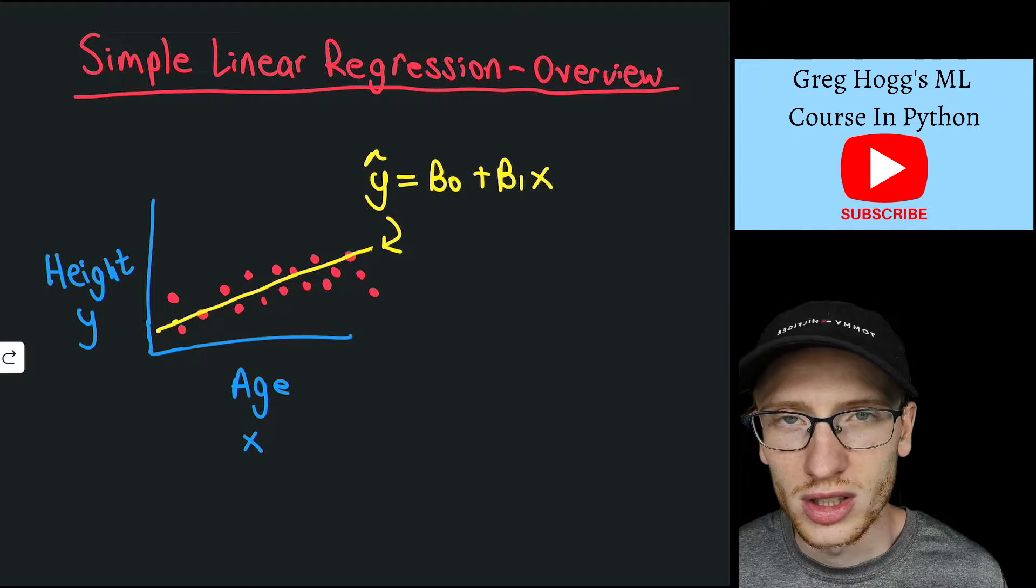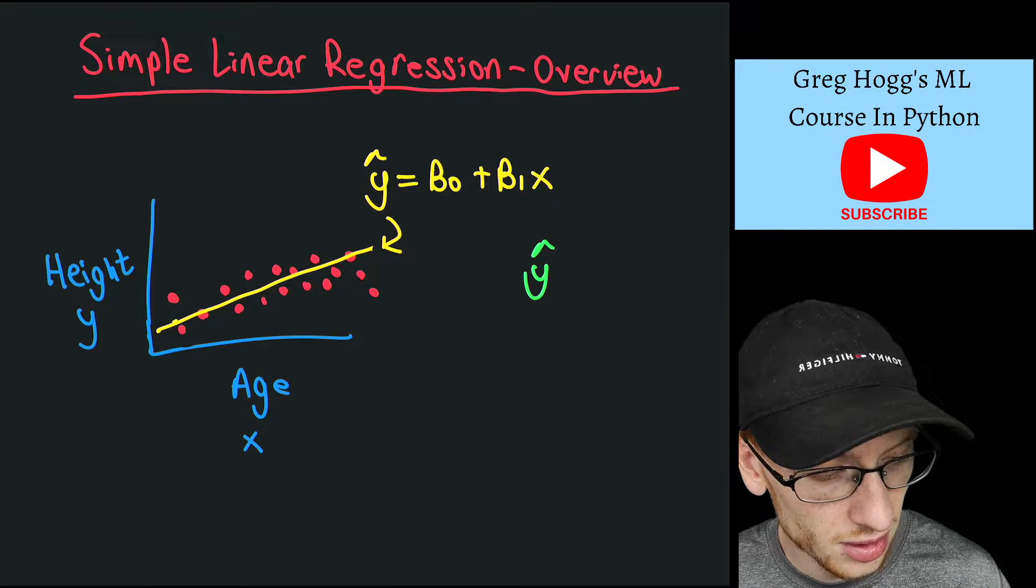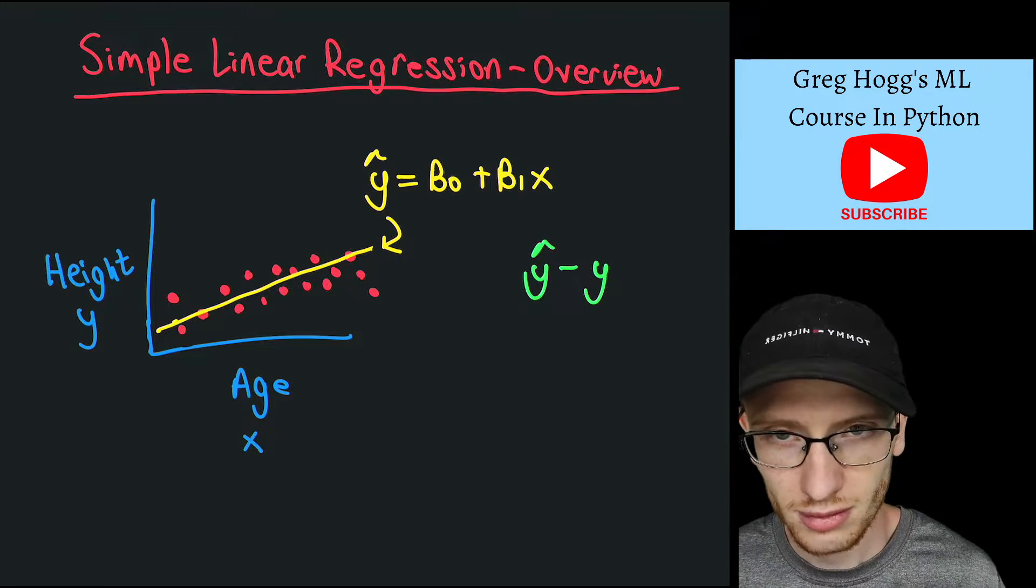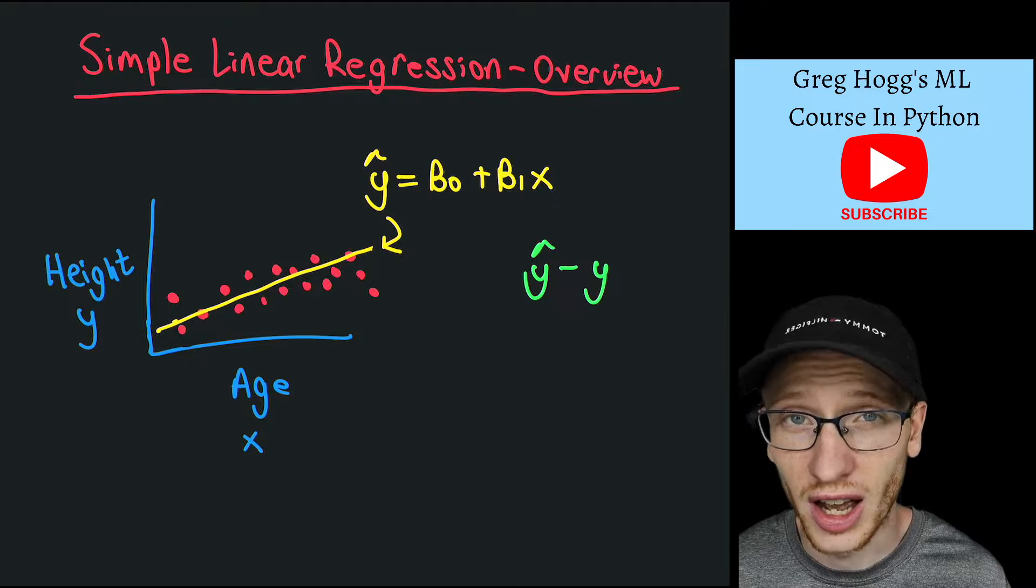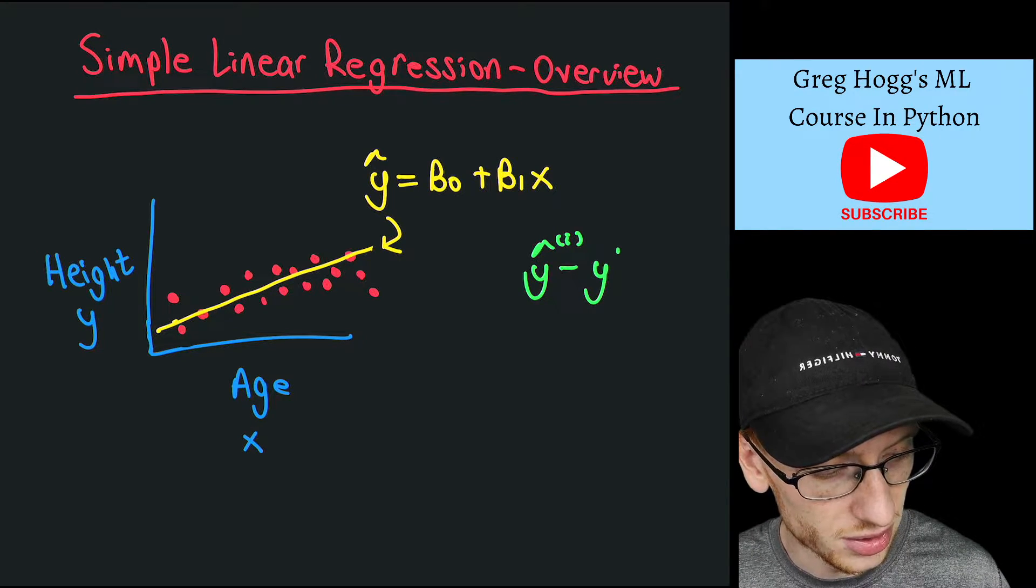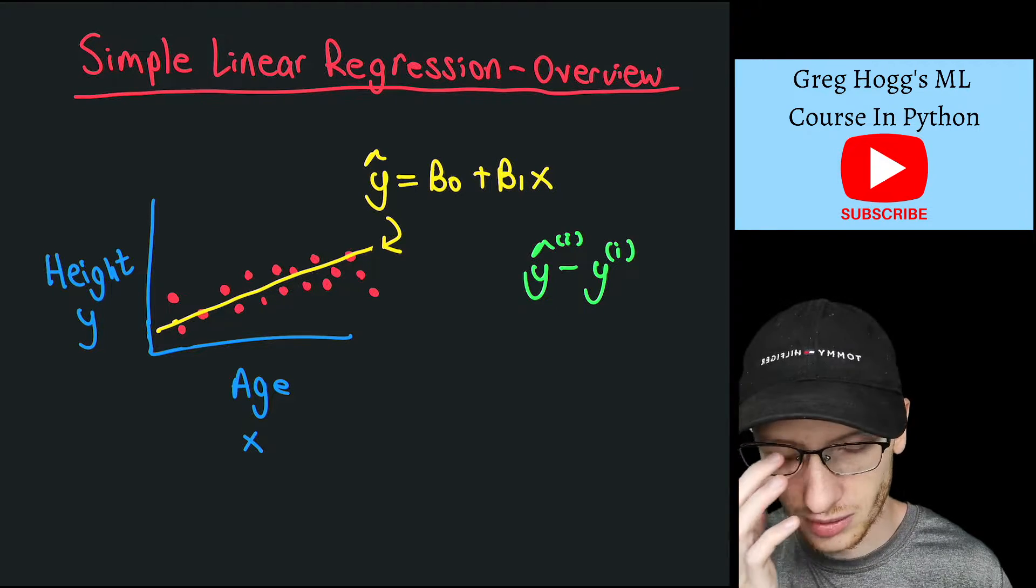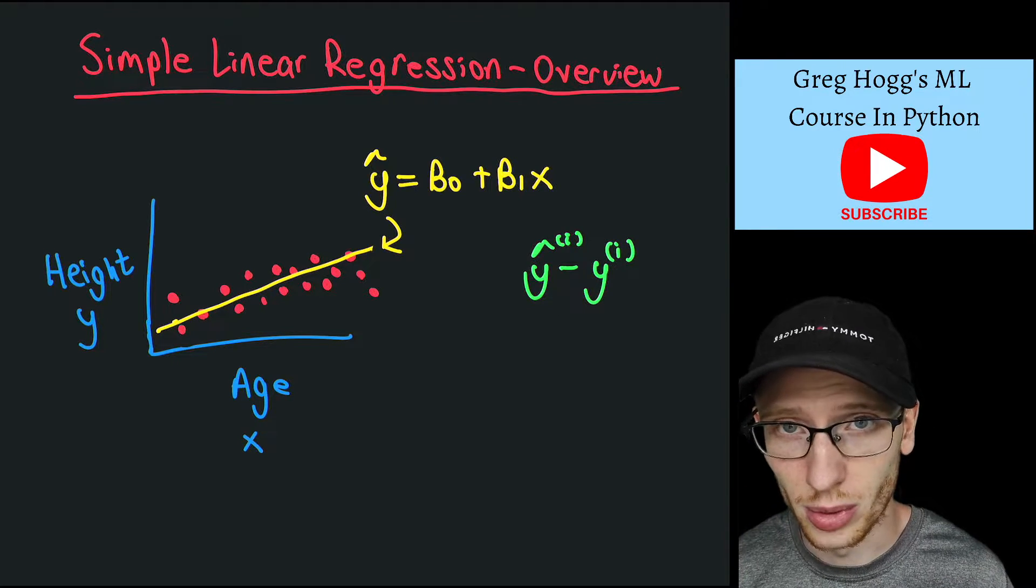So we can talk about these distances numerically as y hat minus y, right? And if I was to talk about, say, the ith data point, I would say y_i hat minus y_i. So that's really the difference between the line and the point.